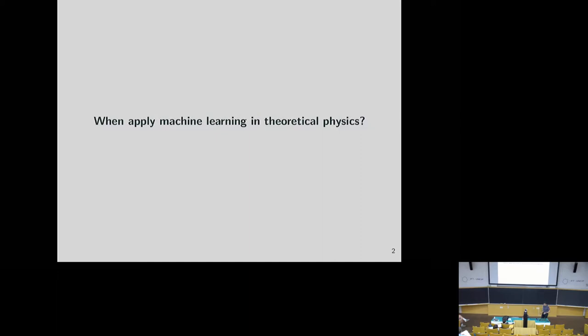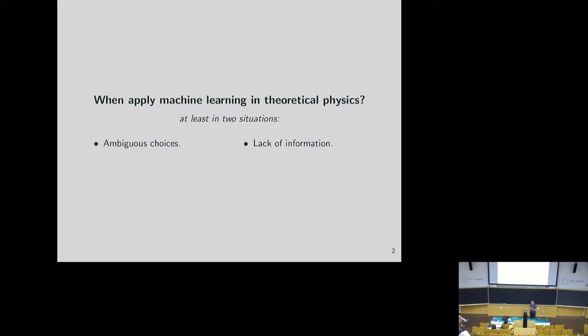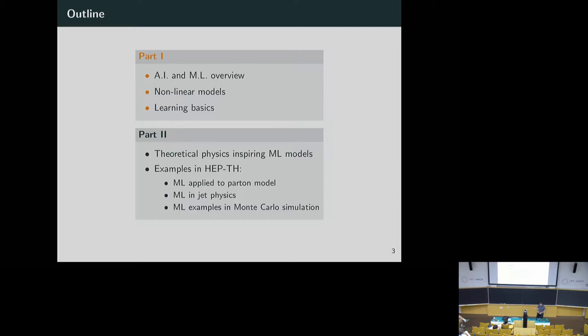When should we apply machine learning in theoretical physics? By definition, as theoretical physicists, we try to have models where interpretability is very high — we understand what's going on and we don't like black boxes. But there are a couple of examples where machine learning is really relevant: in situations where there is an ambiguous choice and you don't know what to do, or in situations where there is a lack of information and no perturbative calculation or theoretical argument to make a choice.